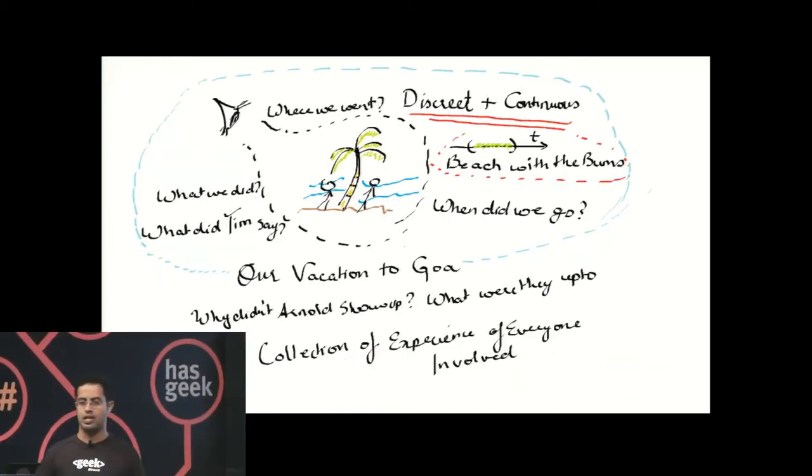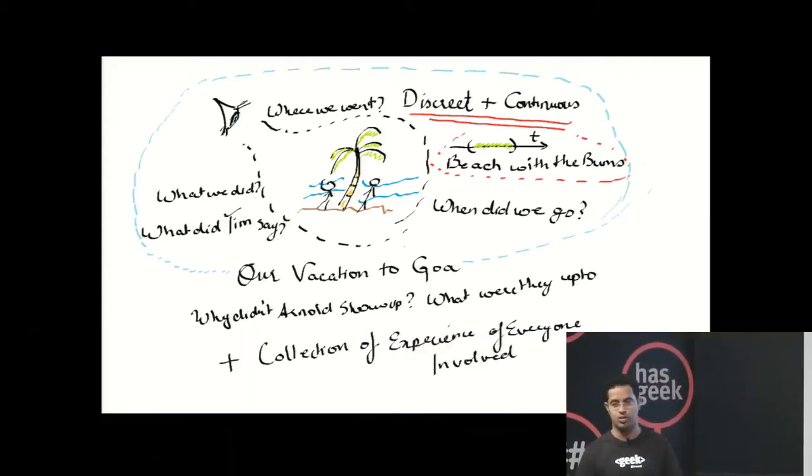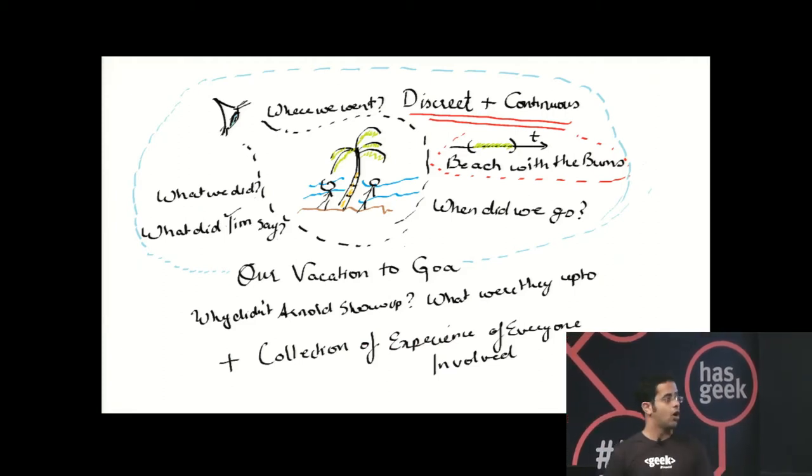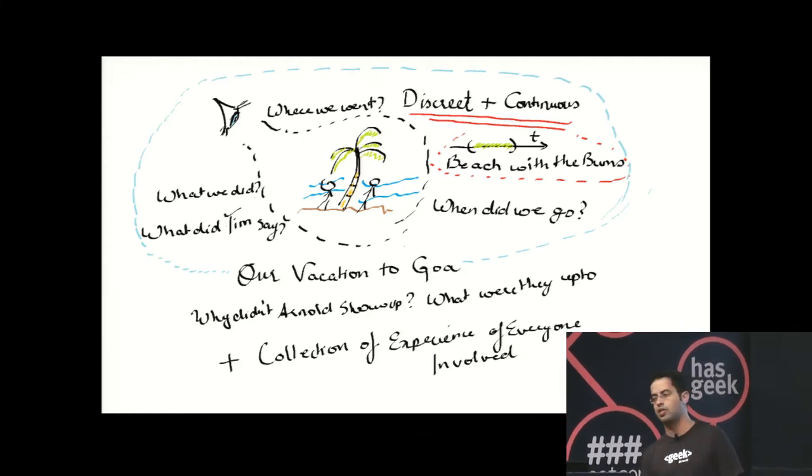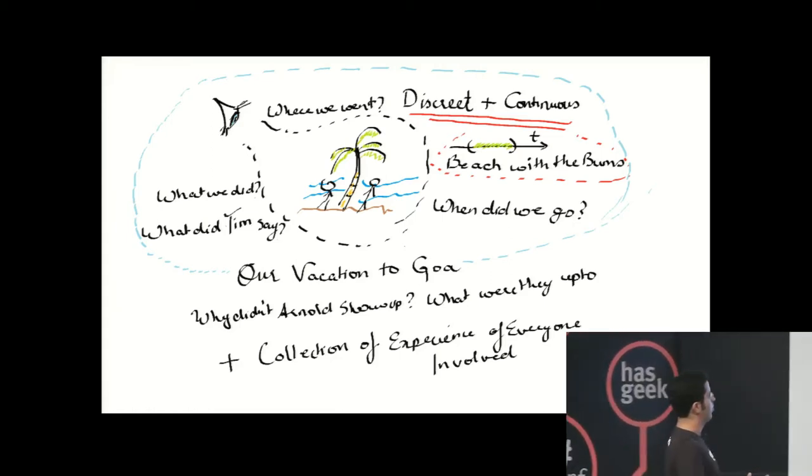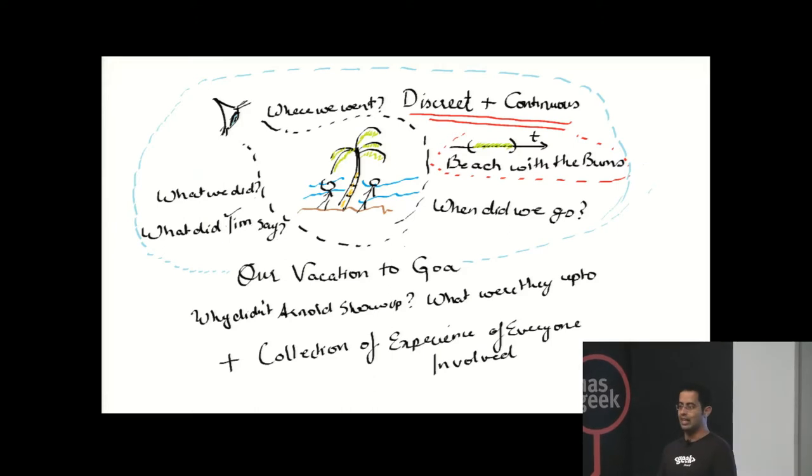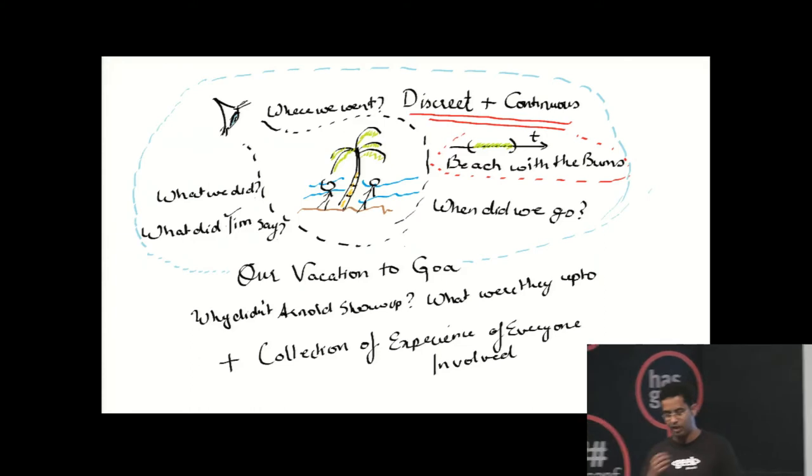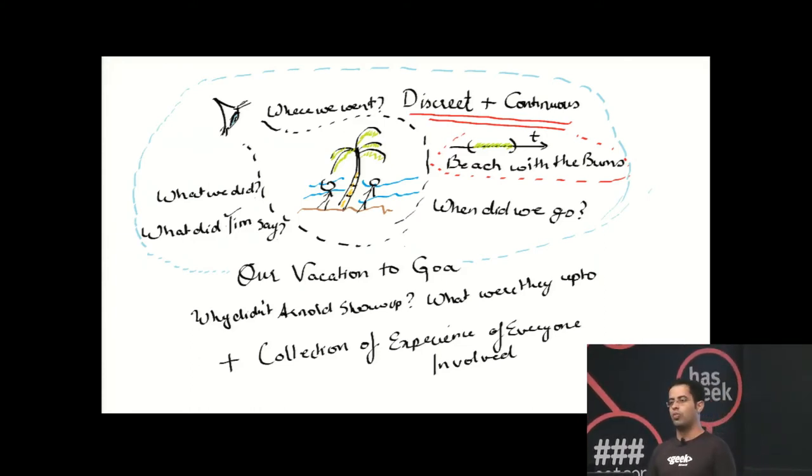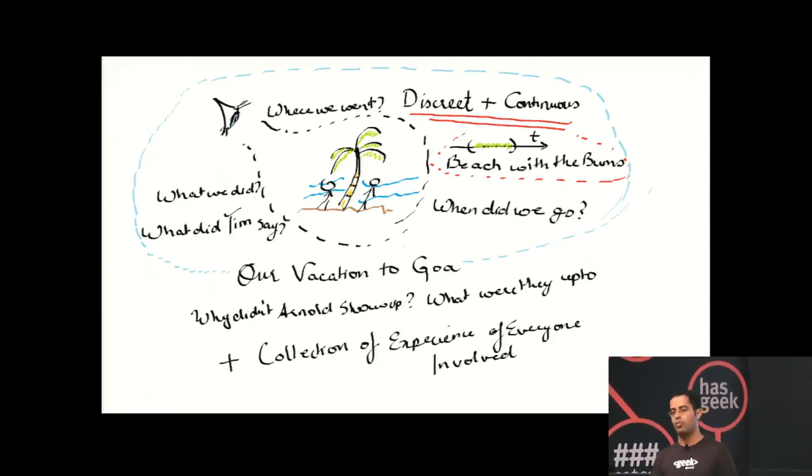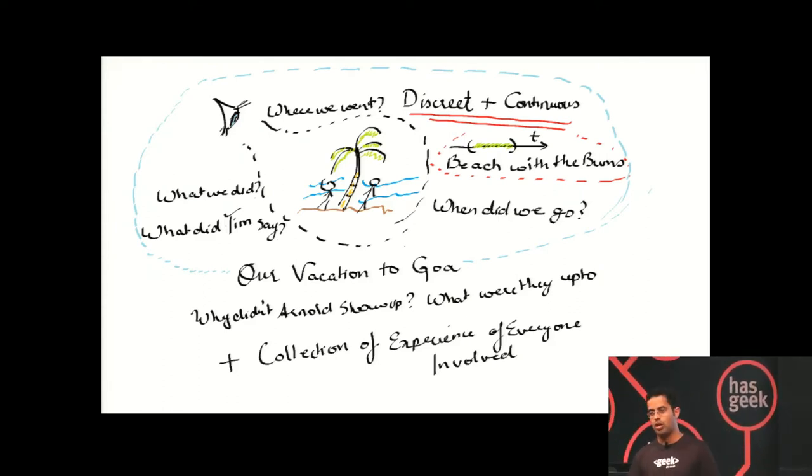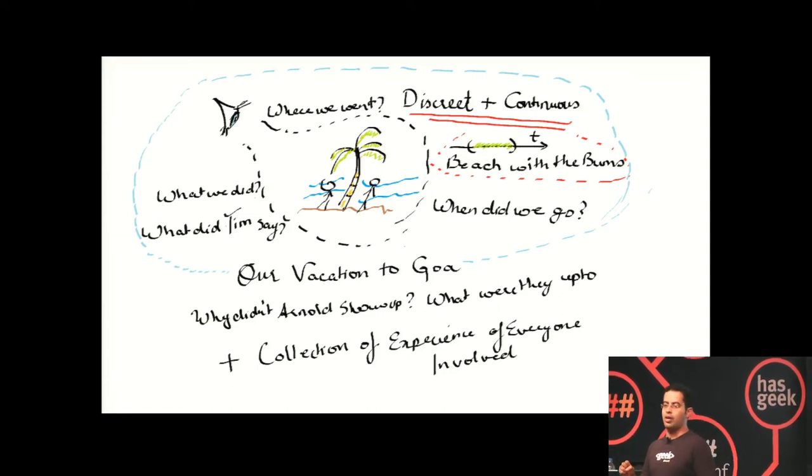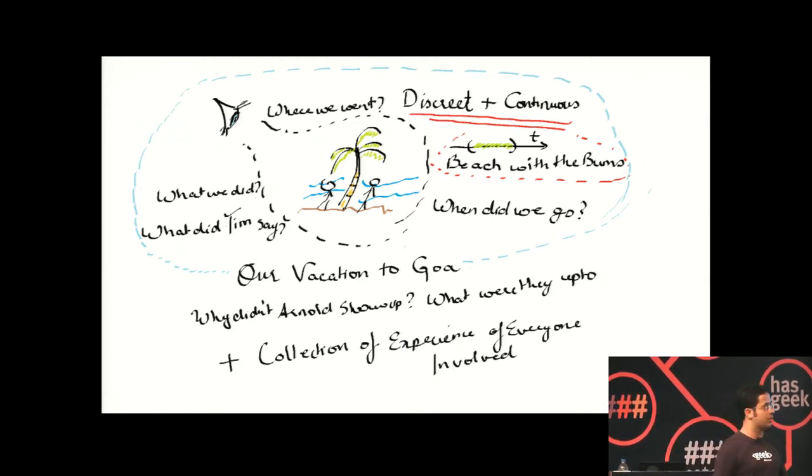Have a look at this example. This is a situation when you go to the beach. The human definition of an event, of going to the beach, is discrete. It's fuzzily discrete, yet it's continuous. It contains state about itself. You have questions like what did Tim say? Where did we go? What did we do? What did we eat? It encapsulates the conversations around it. It encapsulates the probability of someone showing up.